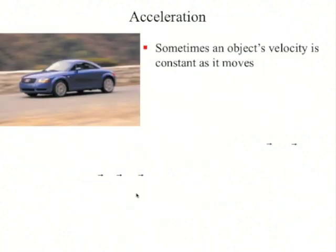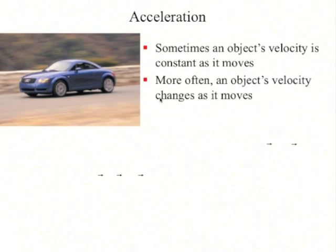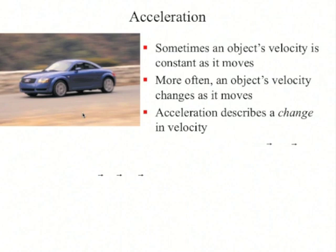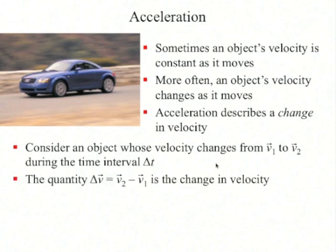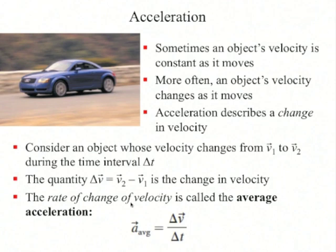Below is a motion diagram of a tortoise racing a hare. The green arrows are average velocity vectors between two individual frames, and the length of each arrow represents the average speed. Sometimes an object's velocity is constant as it moves, but more often an object changes its velocity. Acceleration describes a change in velocity. Consider an object whose velocity changes from v₁ to v₂ during a time interval delta t. The quantity delta v equals v₂ minus v₁ is the change in velocity, and the rate of change of velocity is called the average acceleration: delta v divided by delta t.